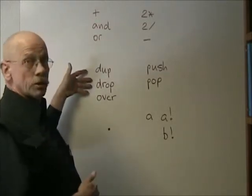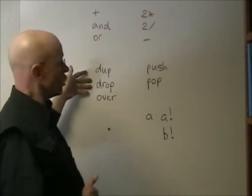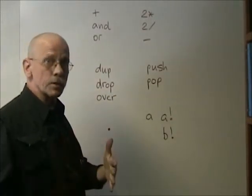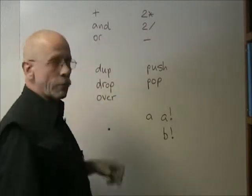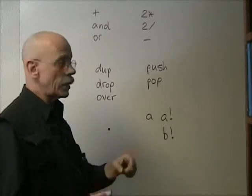Stack operations: Dupe, drop, and over. These are familiar to anybody that does Forth coding. Dupe takes T and copies it into S. S is pushed onto the stack. Drop destroys T, replaces it with what was in S, and pops the stack into S.